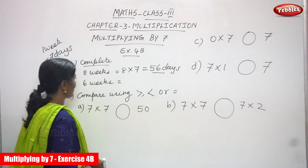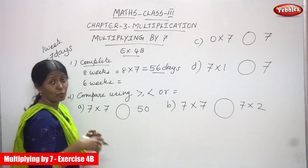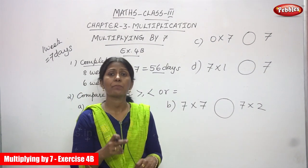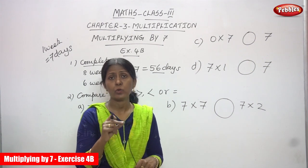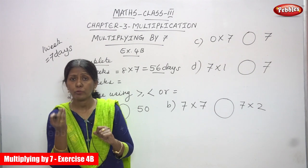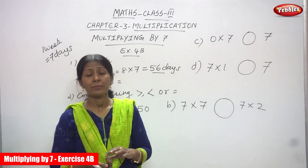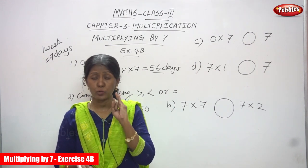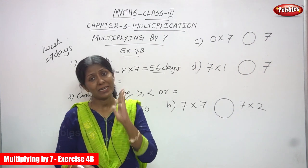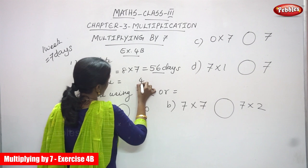The answer is 56 days. And for 6 weeks: 1 week is equal to 7 days, so you find out for 6 weeks — that means 6 into 7. 6 into 7 is 42. So: 1 seven is 7, 2 sevens are 14, 3 sevens are 21, 4 sevens are 28, 5 sevens are 35, 6 sevens are 42. The answer is 42 days.